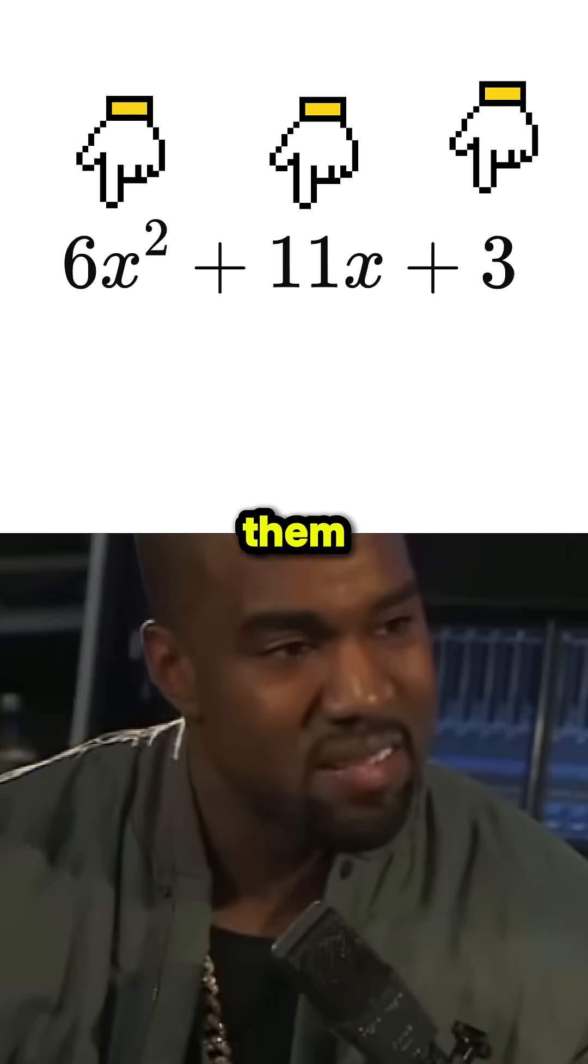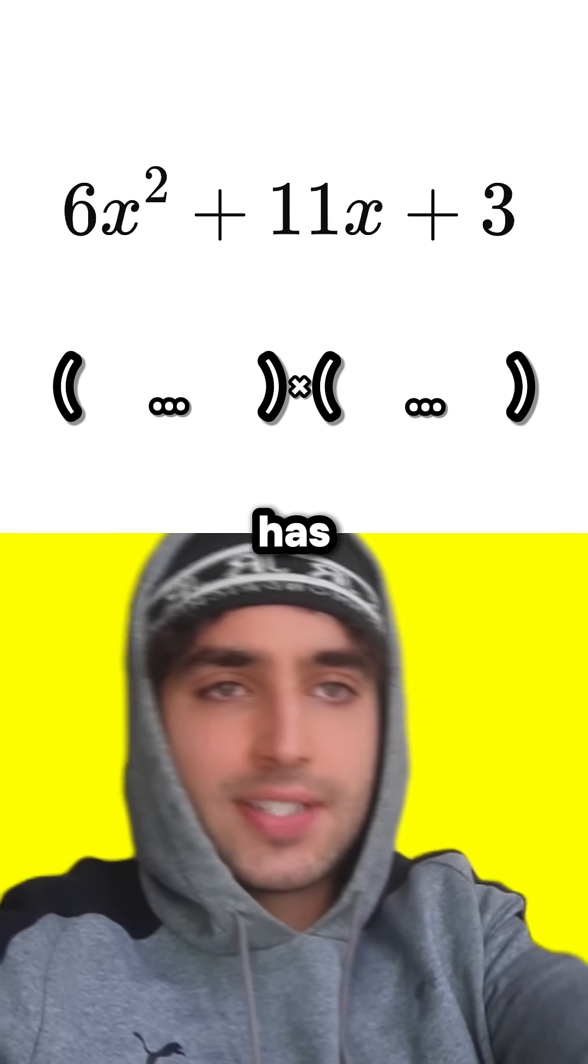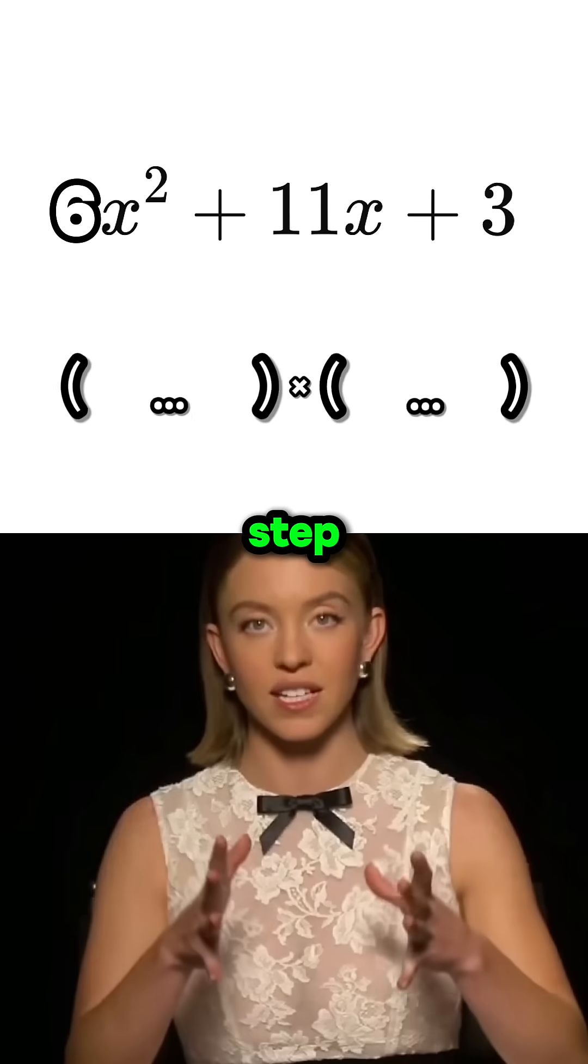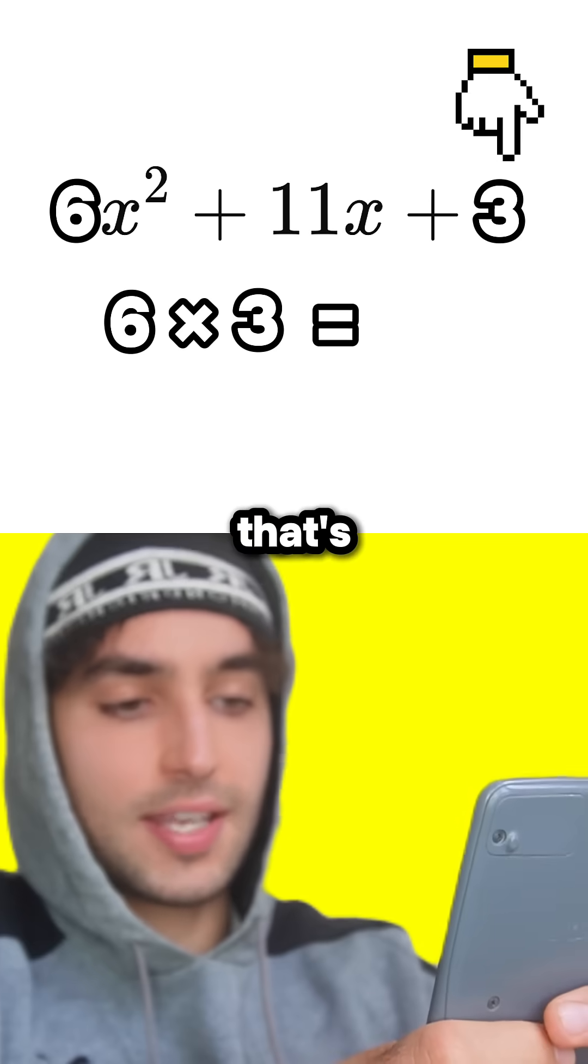Let's simplify these three terms and put them into brackets. Raul, this question has a number in front of the x squared. First step is to times that number by the 3 on the end. Okay, so that's 18.